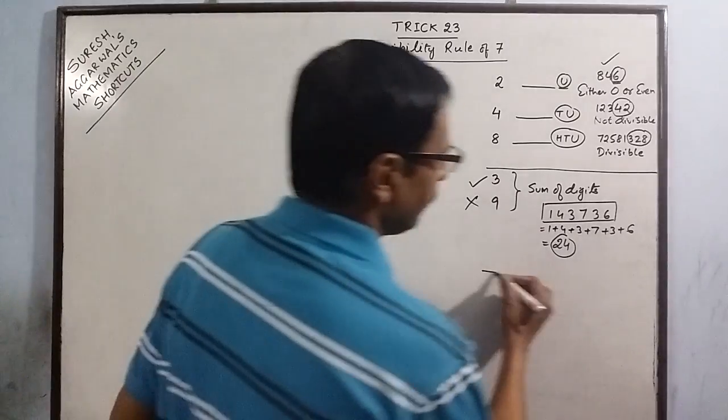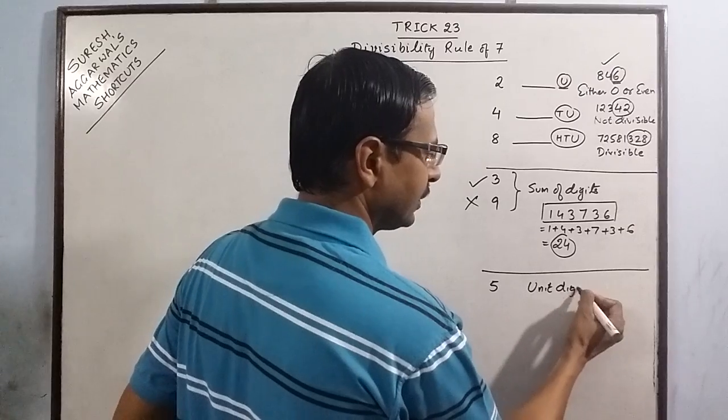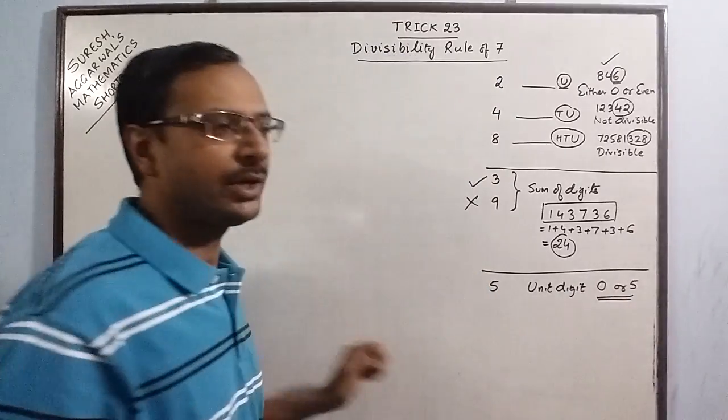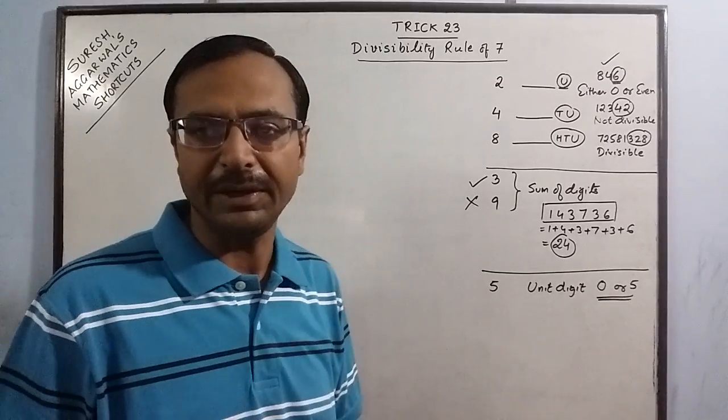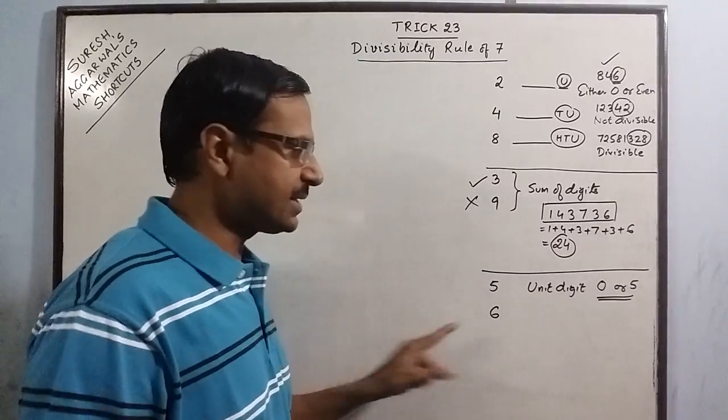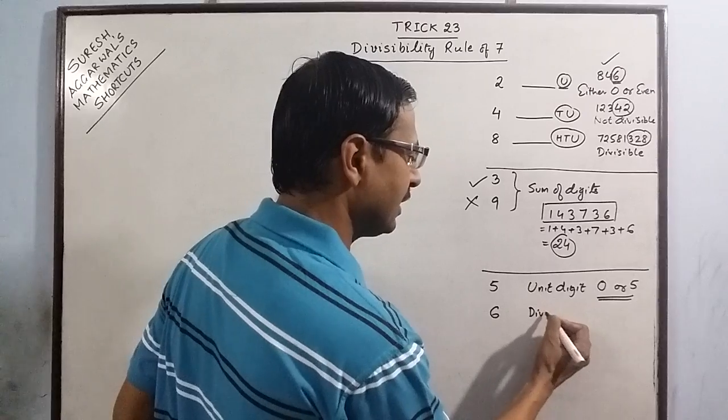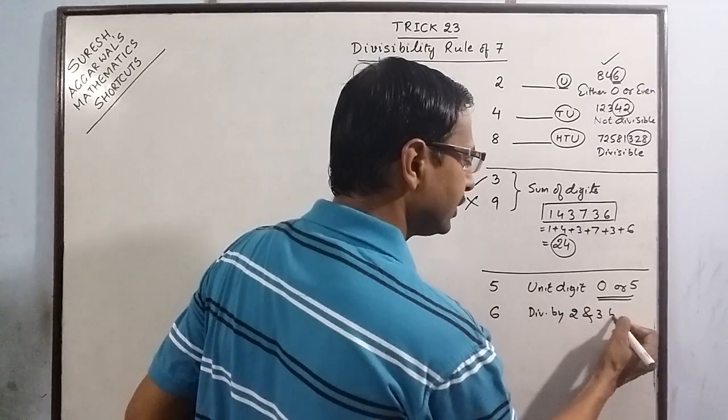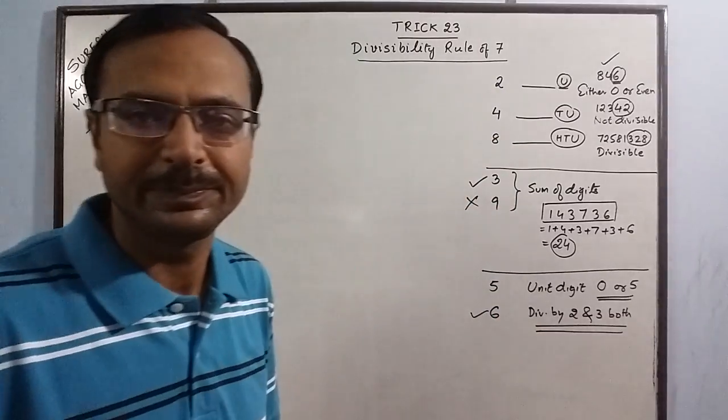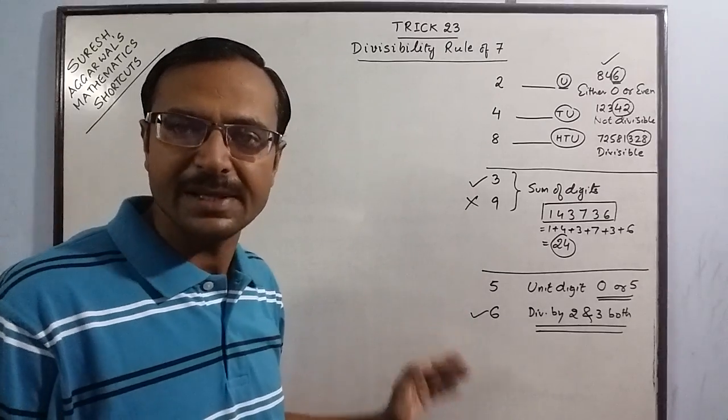Then coming to 5, here we have the unit digit as 0 or 5. If the unit digit is 0 or 5 then the number is divisible by 5. That is very simple. And for 6, 6 is 2 into 3, so if the number is divisible by 2 and 3 both, then the number is divisible by 6 also. So this completes all the numbers of single digits except 7.